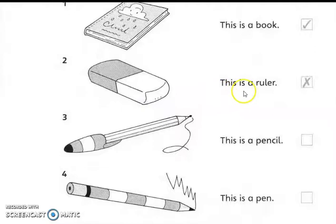Number two. This is a ruler. Is it right? No, this is not a ruler. So you cross here. Right?